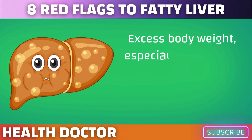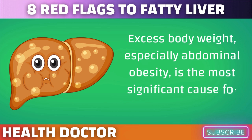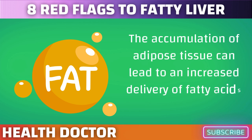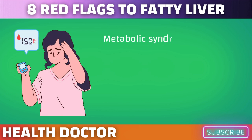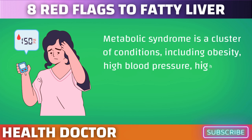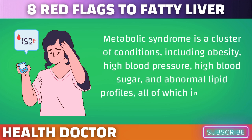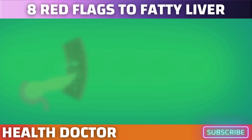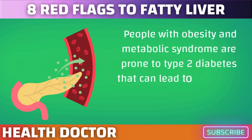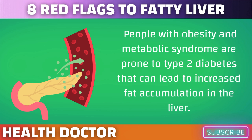Let's discuss some reasons that may cause fatty liver in the first place. Excess body weight, especially abdominal obesity, is the most significant cause of fatty liver. The accumulation of adipose tissue can lead to an increased delivery of fatty acids to the liver. Metabolic syndrome is a cluster of conditions including obesity, high blood pressure, high blood sugar, and abnormal lipid profiles, all of which increase the risk of fatty liver. People with obesity and metabolic syndrome are prone to type 2 diabetes, which can lead to increased fat accumulation in the liver.